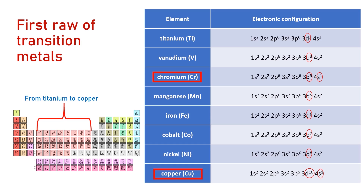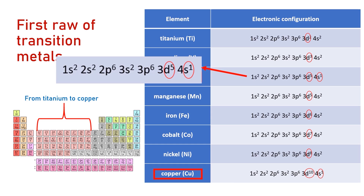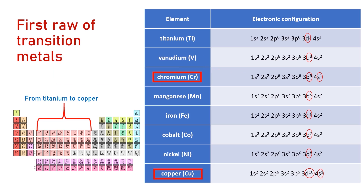The second transition element is vanadium, which also has 4S completely filled with two electrons and 3D with three electrons. Moving to chromium, we would expect it to have 4S completely filled with two electrons and 3D with four electrons. Instead, we can see that it has one electron in the 4S subshell and five electrons in the 3D subshell. Then, moving from manganese to nickel, 4S is again completely filled with two electrons and the 3D is successively filled.